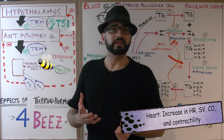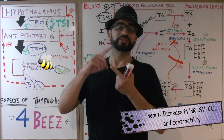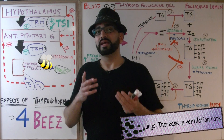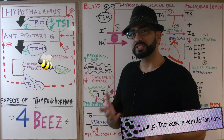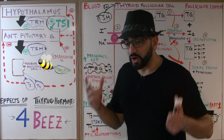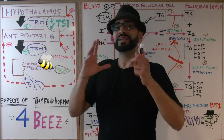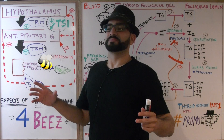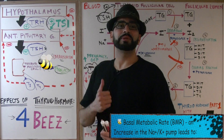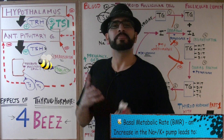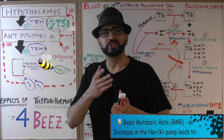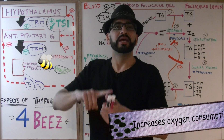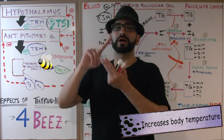The third B is beta-adrenergic effects. Acting on the heart, thyroid hormone increases heart rate, stroke volume, cardiac output, and contractility. Acting on the lungs via beta-1 receptors, it increases the ventilation rate, ultimately increasing oxygen delivery to all tissues. The fourth B: thyroid hormone increases the BMR — basal metabolic rate — by increasing the activity of the sodium-potassium ATPase pump, increasing oxygen consumption, respiratory rate, and body temperature.